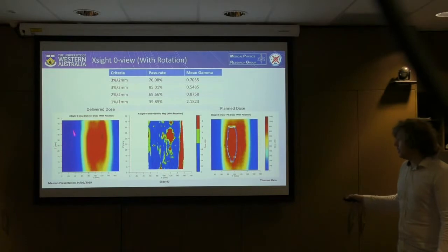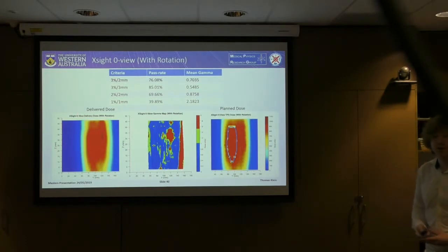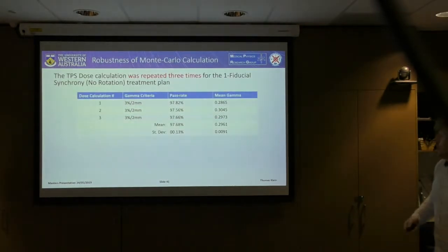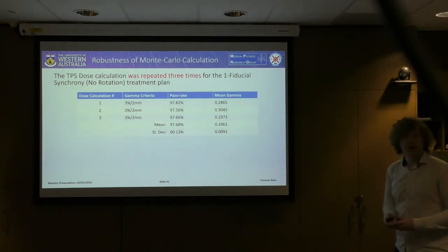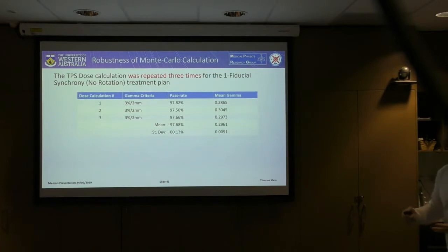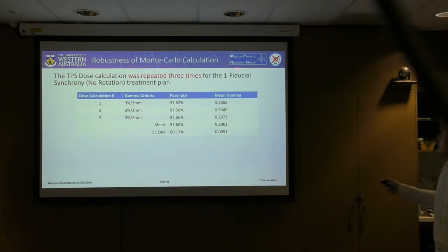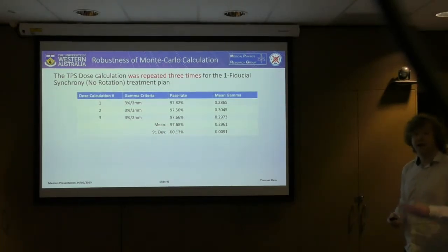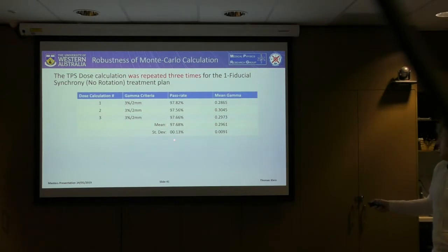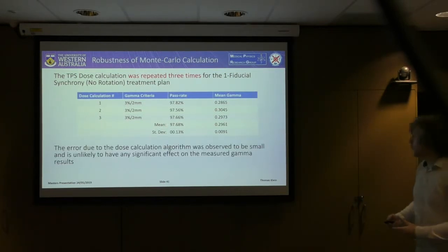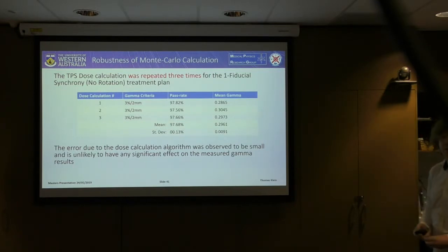This zero-view approach is how a moving target would be treated conventionally on a linear accelerator, showing how much larger the treatment area is by comparison. All dose calculations used Monte Carlo calculation, and we assessed the error in agreement attributable purely to variance in treatment planning dose calculation. Repeating the dose calculation three times for one treatment plan and comparing each to the delivery, the standard deviation was very small — so the error from the dose calculation algorithm is unlikely to influence any of our gamma results.